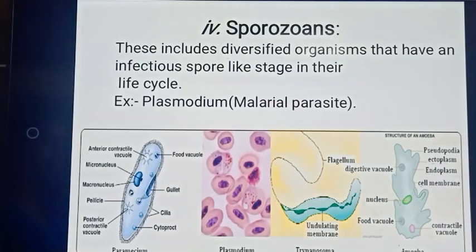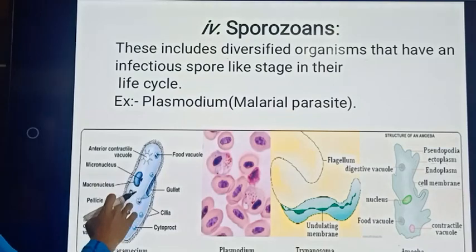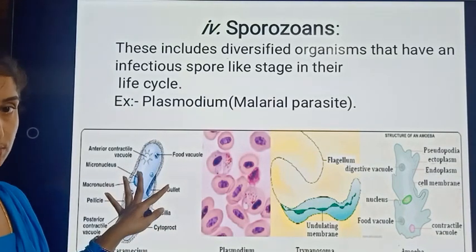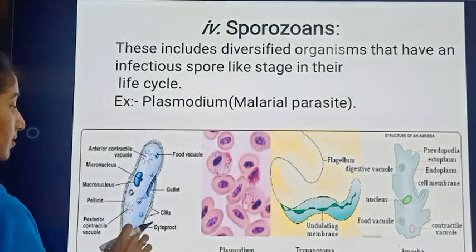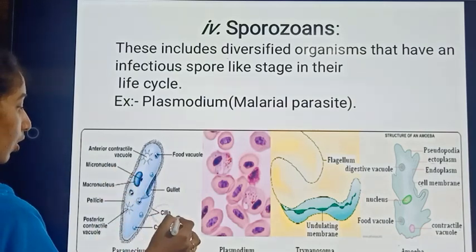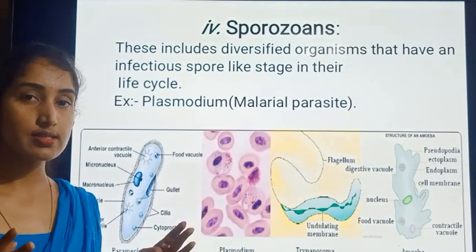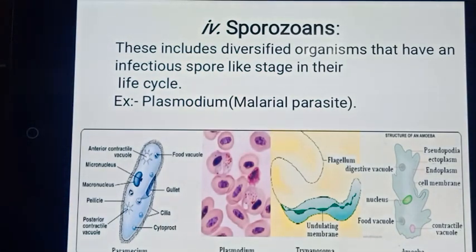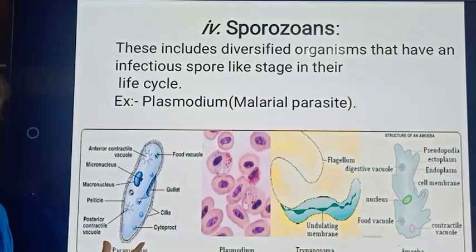The second type — Paramecium is the best example for ciliated protozoan. Paramecium is a single-celled organism completely covered by a plasma membrane, which is covered with thousands of small hair-like projections called cilia. Within the fluid, we find a posterior contractile vacuole present at the posterior or end region of the Paramecium.